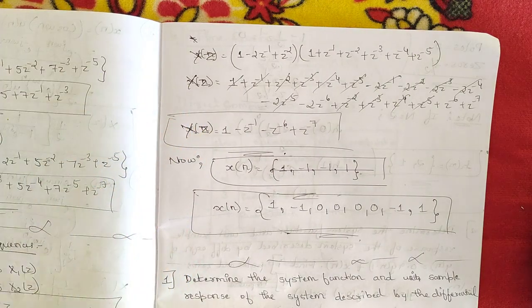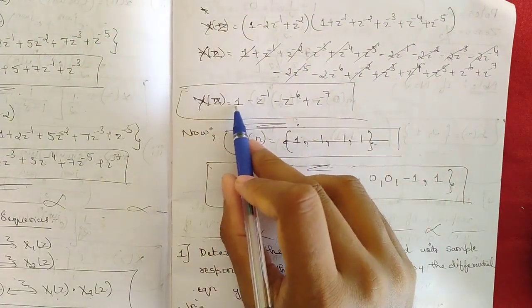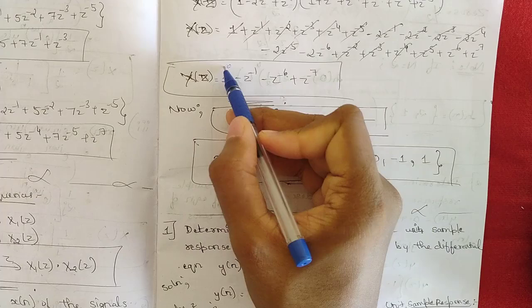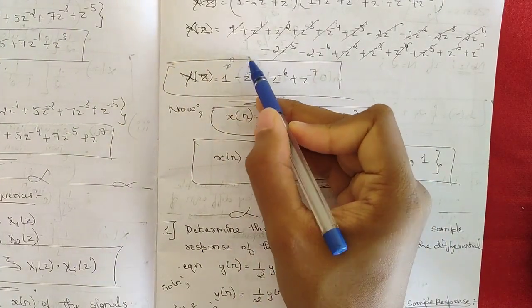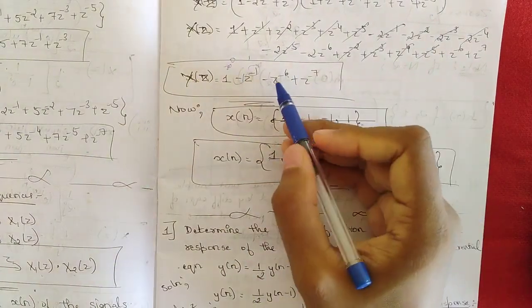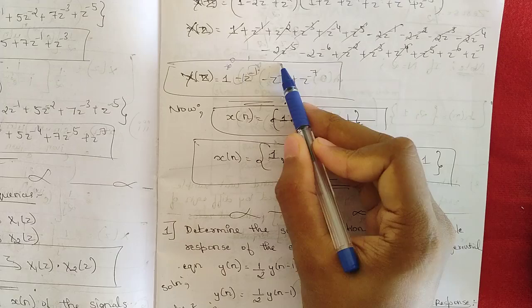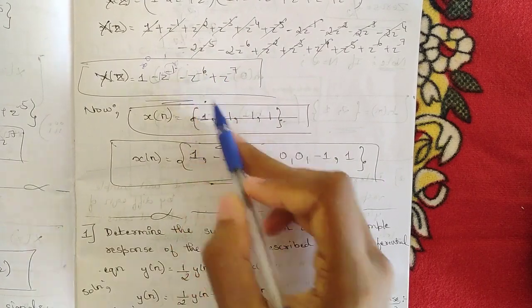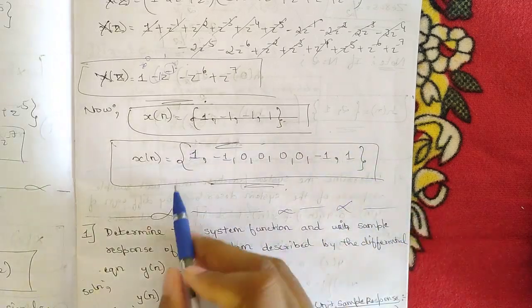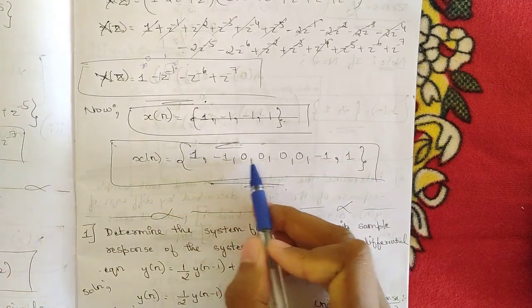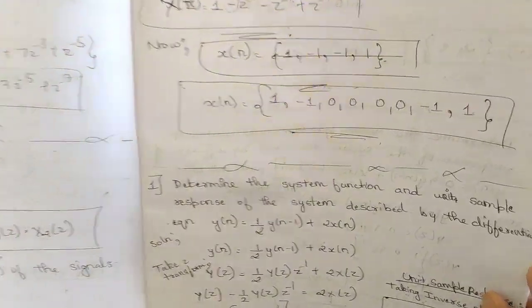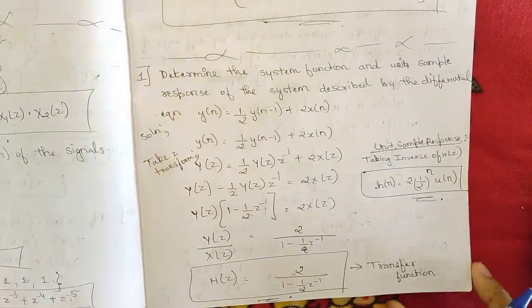But this is not the final answer — we need to find x[n], so we take the inverse Z-transform. Reading off the coefficients: z⁰ gives 1, z⁻¹ gives -1, there are no z⁻², z⁻³, z⁻⁴, z⁻⁵ terms so we add four zeros, z⁻⁶ gives -1, and z⁻⁷ gives +1. So x[n] = {1, -1, 0, 0, 0, 0, -1, 1}.